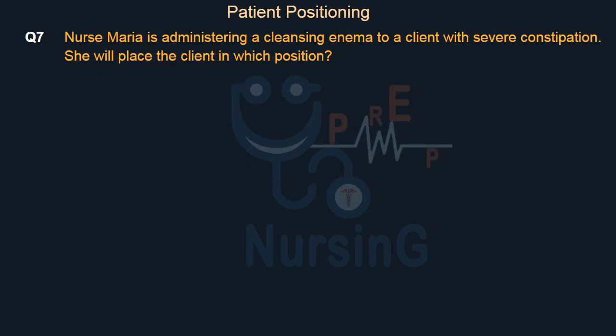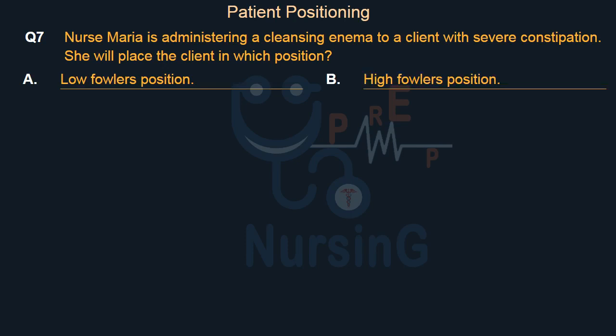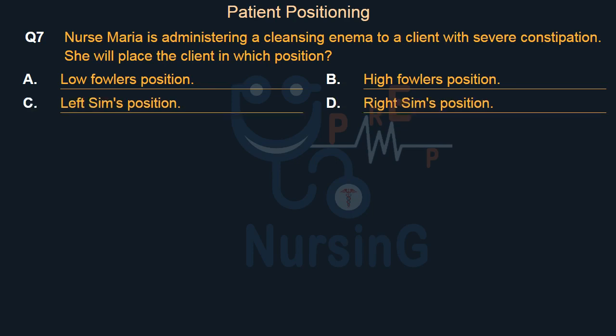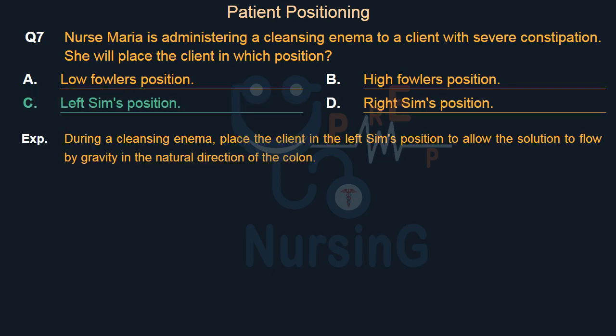Nurse Maria is administering a cleansing enema to a client with severe constipation. She will place the client in which position? Option A, low Fowler's position; Option B, high Fowler's position; Option C, left Sims position; Option D, right Sims position. The right answer is Option C, left Sims position. During a cleansing enema, place the client in the left Sims position to allow the solution to flow by gravity in the natural direction of the colon.